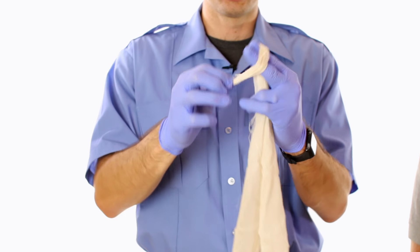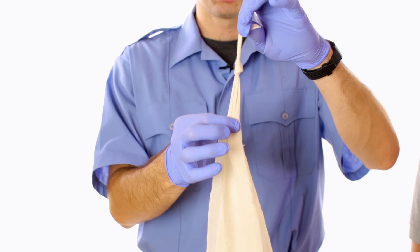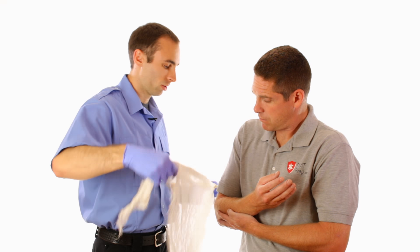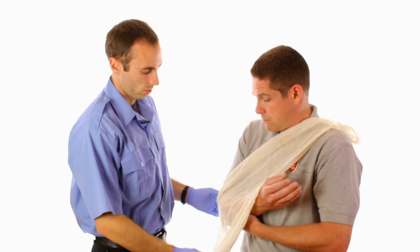Tie an overhand knot to create a cradle for the elbow to rest in. Take the sling with the triangle pointed toward the elbow and gently place over the patient.